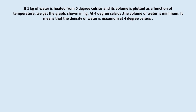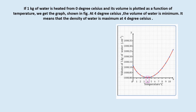If 1 kg of water is heated from 0 degrees Celsius and its volume is plotted as a function of temperature, we get a characteristic graph. The volume of water is plotted on the y-axis and the temperature in degrees Celsius is plotted on the x-axis, and we get the graph as shown in the following figure.